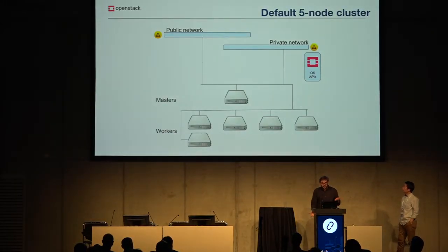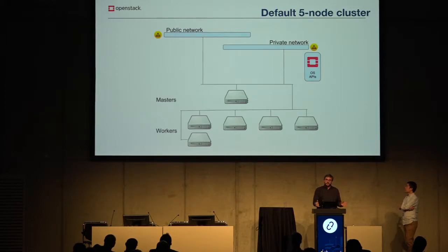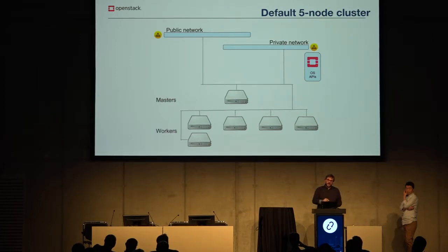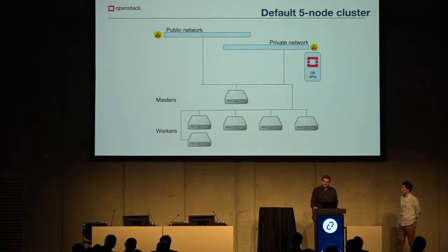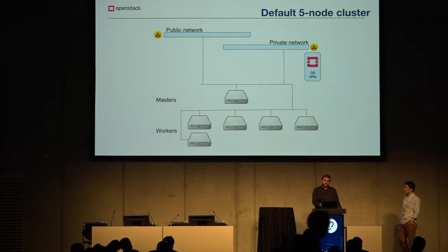How does a cluster look? In a standard Magnum deployment, the most minimal cluster creation will produce some worker nodes and at least one master — all in a tenant network backed by an SDN deployment. All nodes will have a floating IP. This is the default from when the project started, and the most standard way to expose applications is to expose them from the host port directly, though this is not optimal.